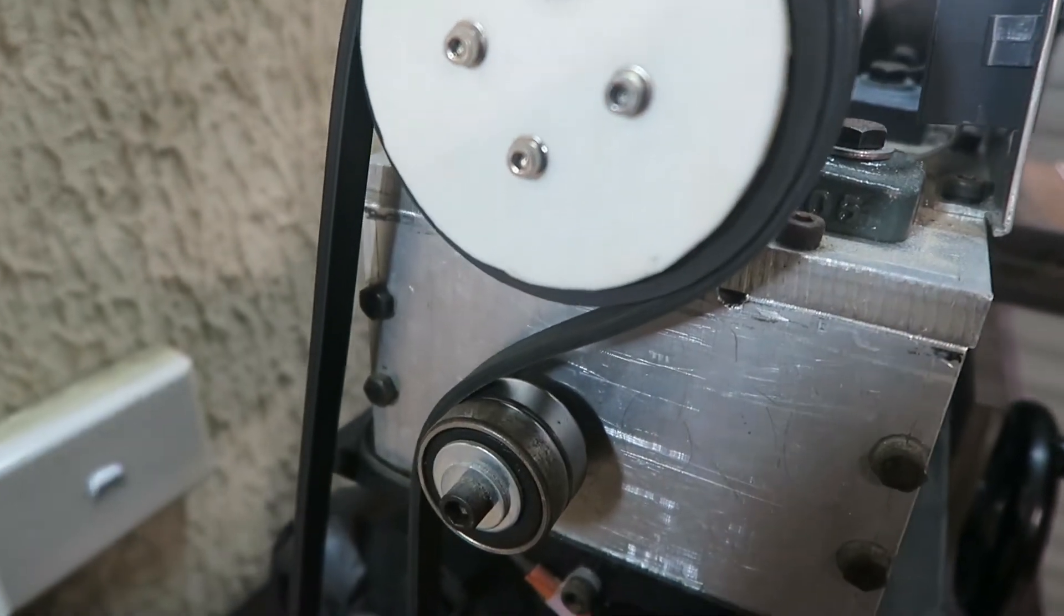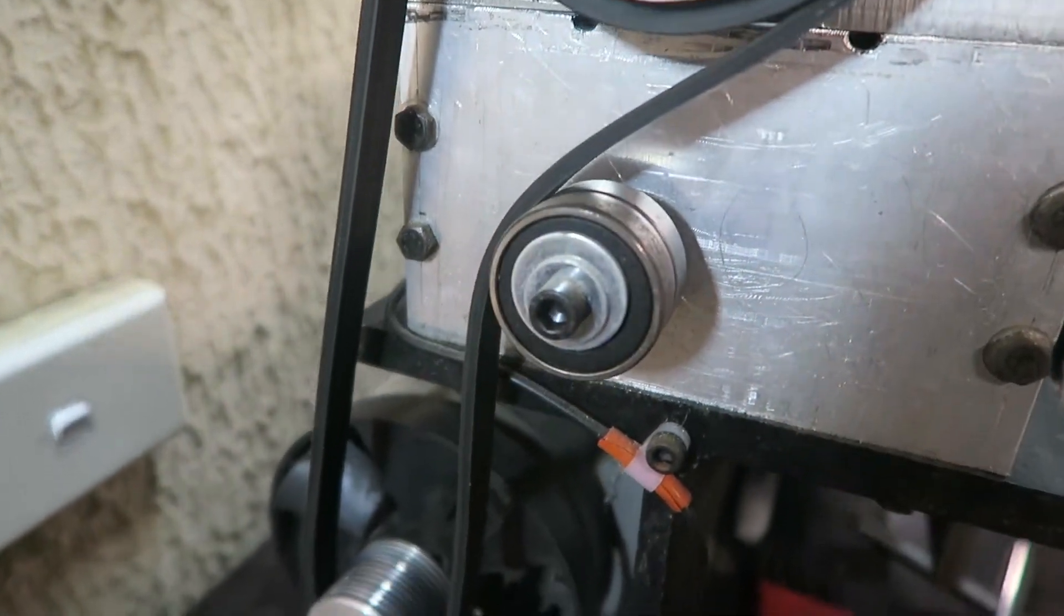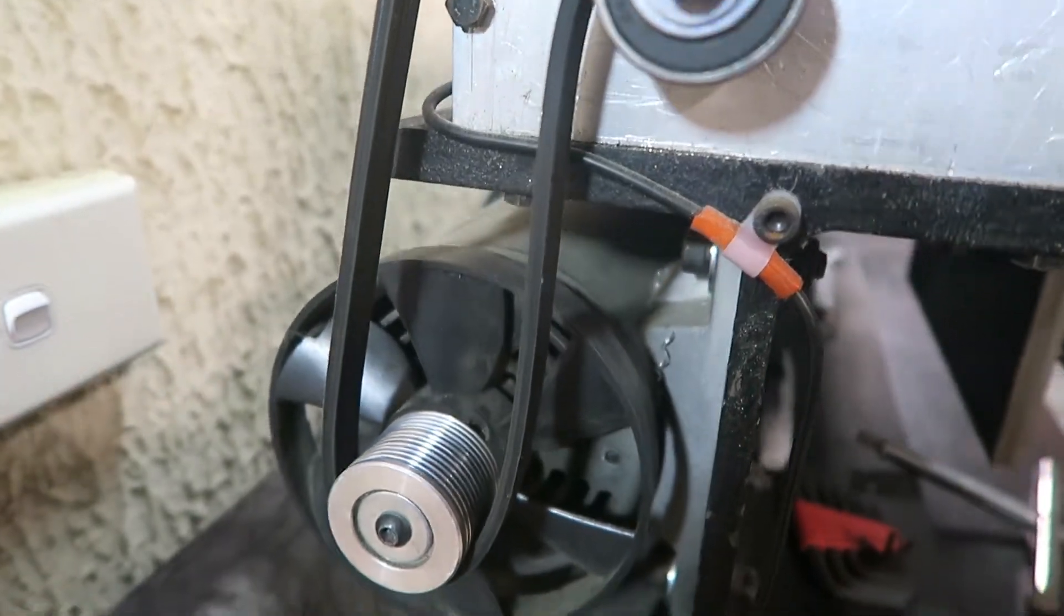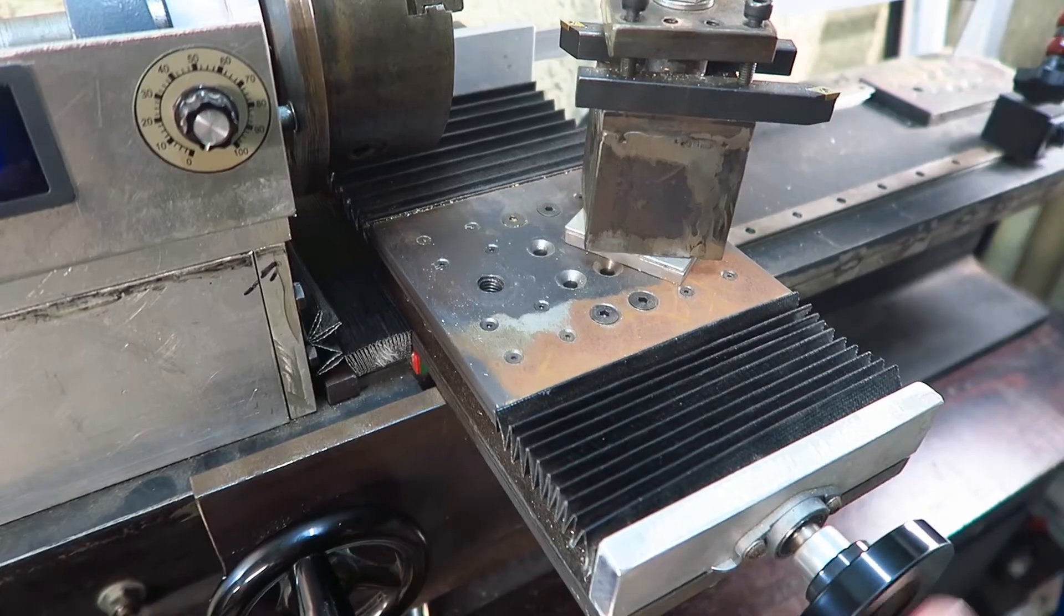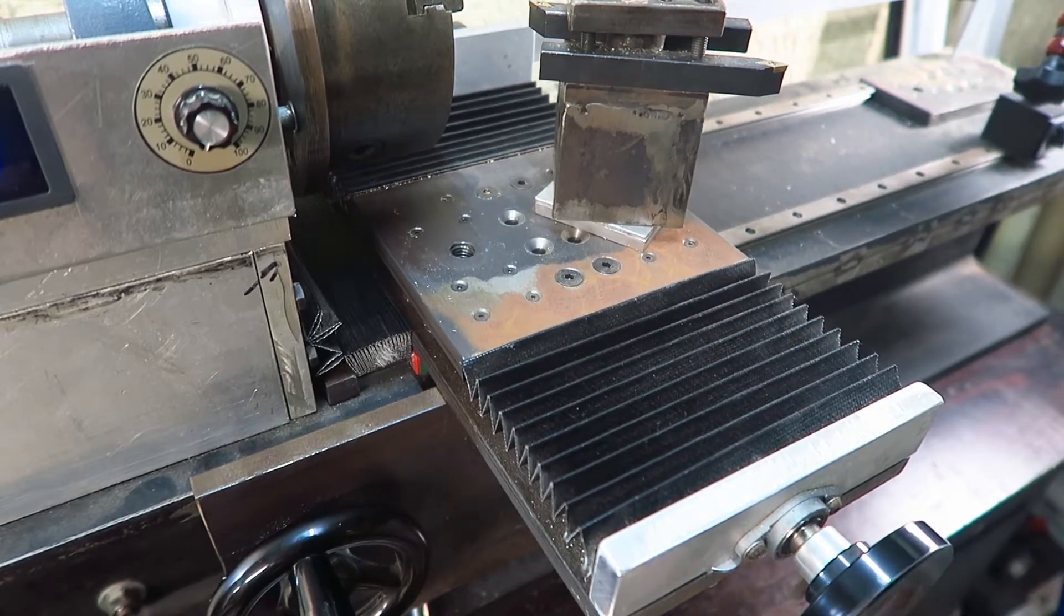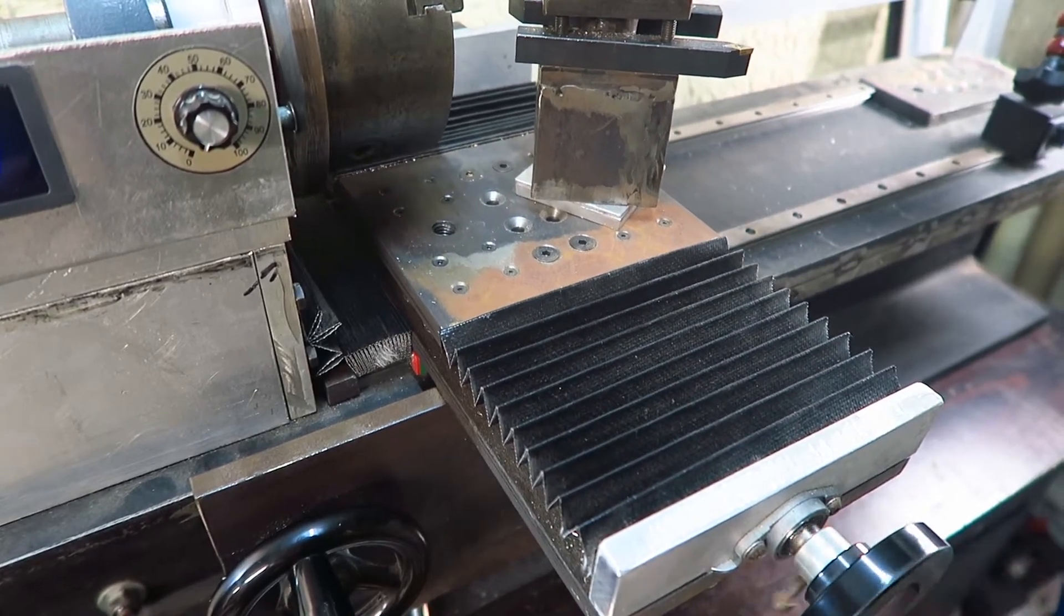The carriage sits on four linear guide blocks as does the cross slide. These rails are holding up well, although by my calculations they are over spec for the job they're doing here. The carriage itself is just 12mm steel plate, same as the cross slide.